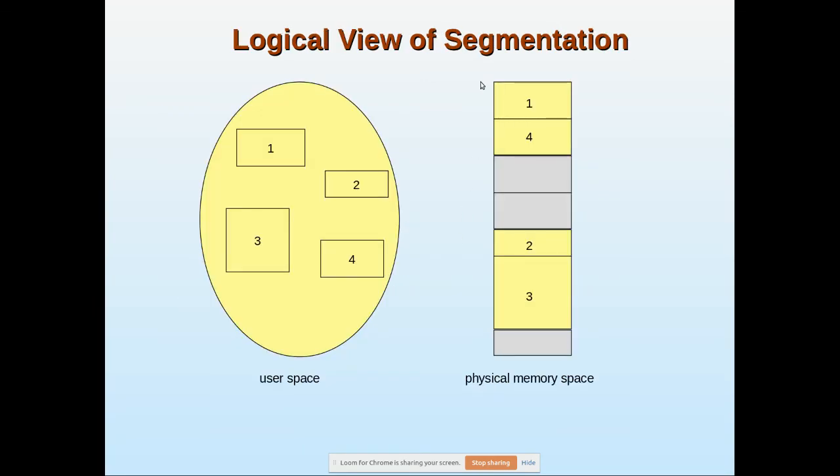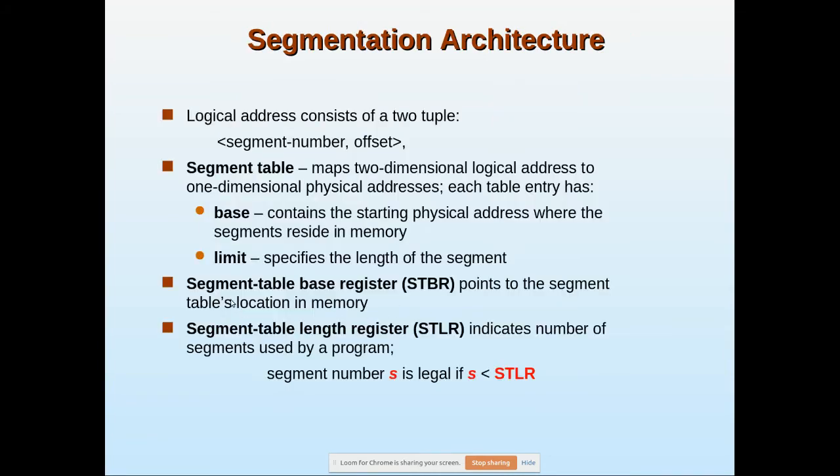For example, if a segment is at location 4000 and has 10 lines, it extends from 4000 to 4010, so the length is 10. If the next segment starts at 4011 and has 50 lines, 4011 plus 50 gives the segment's length. This length is called the limit.